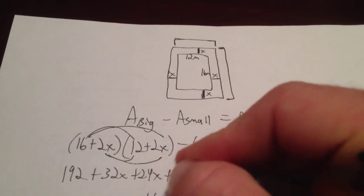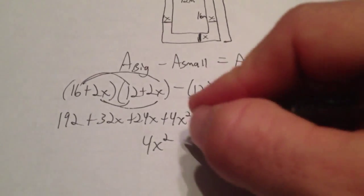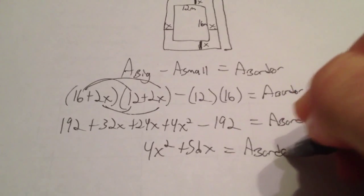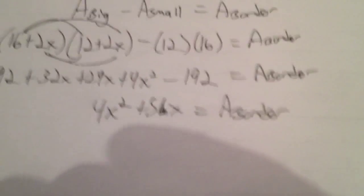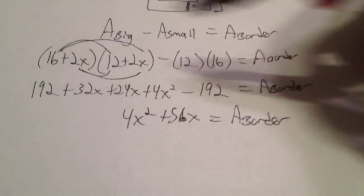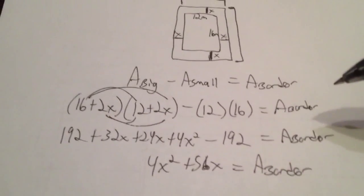And that leaves me with 4x², 32x and 24x is going to be 56x equals the area of the border. So this particular equation right here is the equation that represents the area of our border. Now you could figure out this in a couple of other ways too but I tried to keep this as simple as possible for you and make it be the area of the big minus the area of the small equals the area of the border.